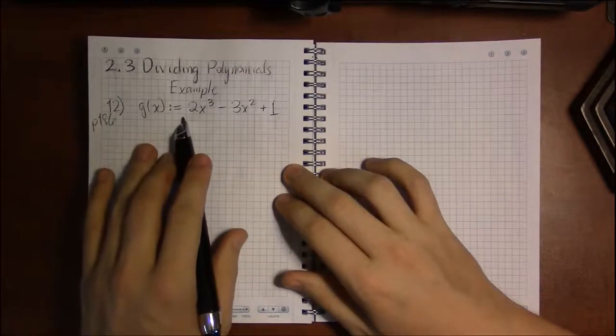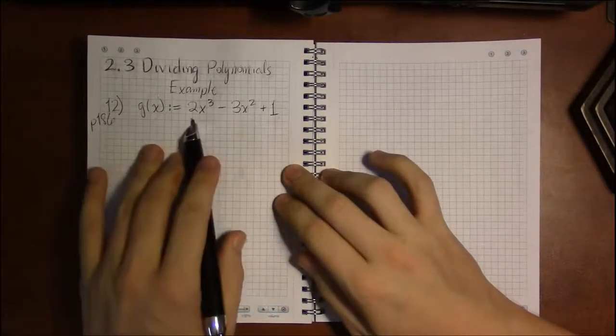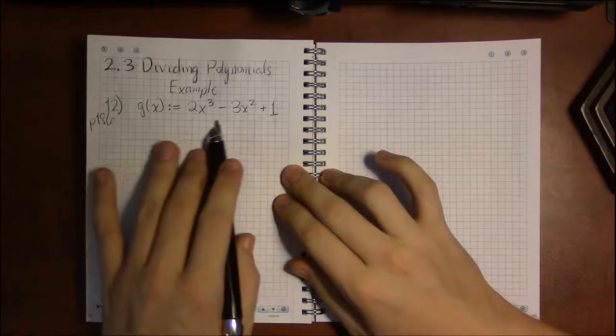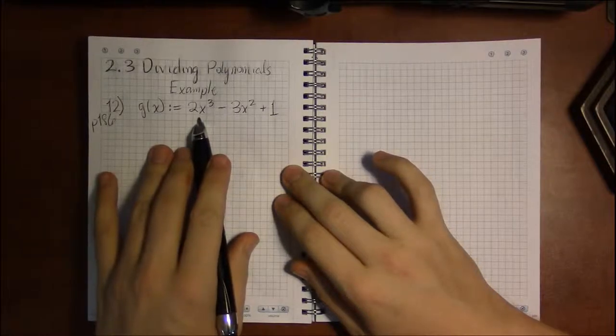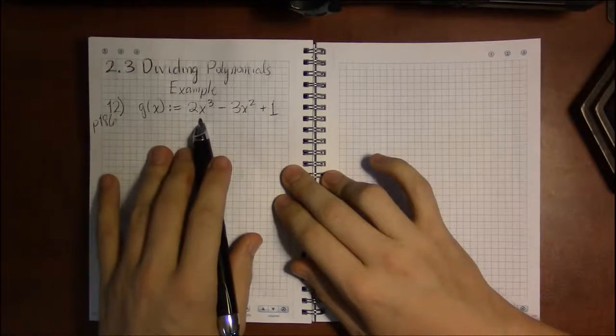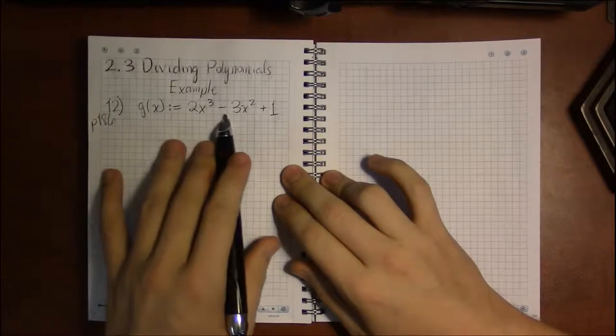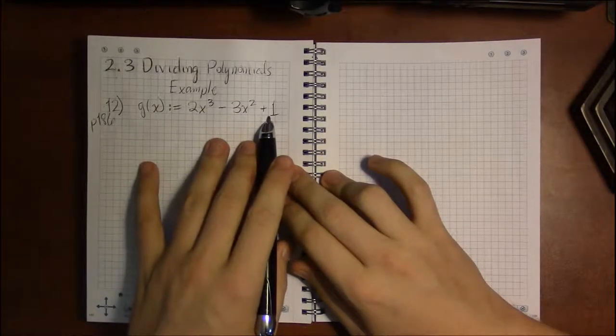We're going to do a lot of synthetic division because we need to be dividing and finding quotients and remainders. The only trouble with this is the same problem we had with the last polynomial in the previous video. Namely, we have an x cubed, an x squared, but no x term.